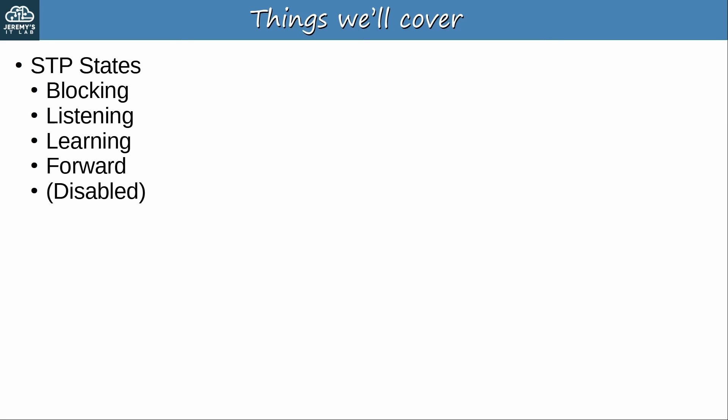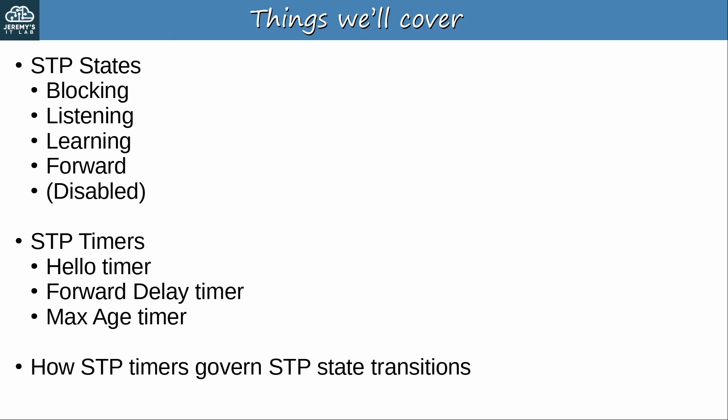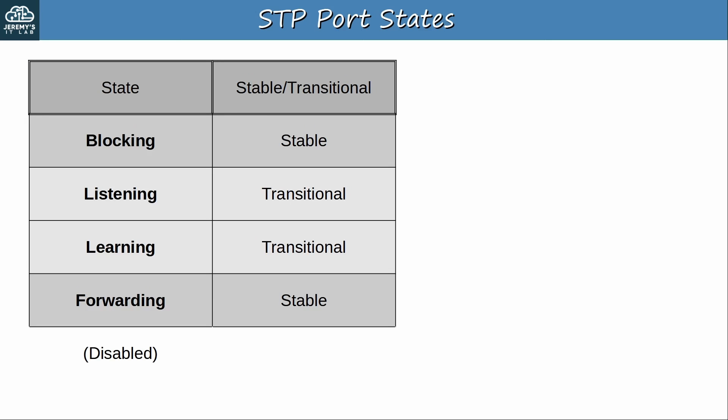Here's what we'll cover. First we'll cover the STP states: blocking, listening, learning, forwarding, and also disabled, which just refers to a disabled port. Then we'll cover the three main STP timers: the hello timer, forward delay timer, and max age timer. And we'll also connect these two topics by looking at how these timers govern how STP ports transition through the different states. Let's get started.